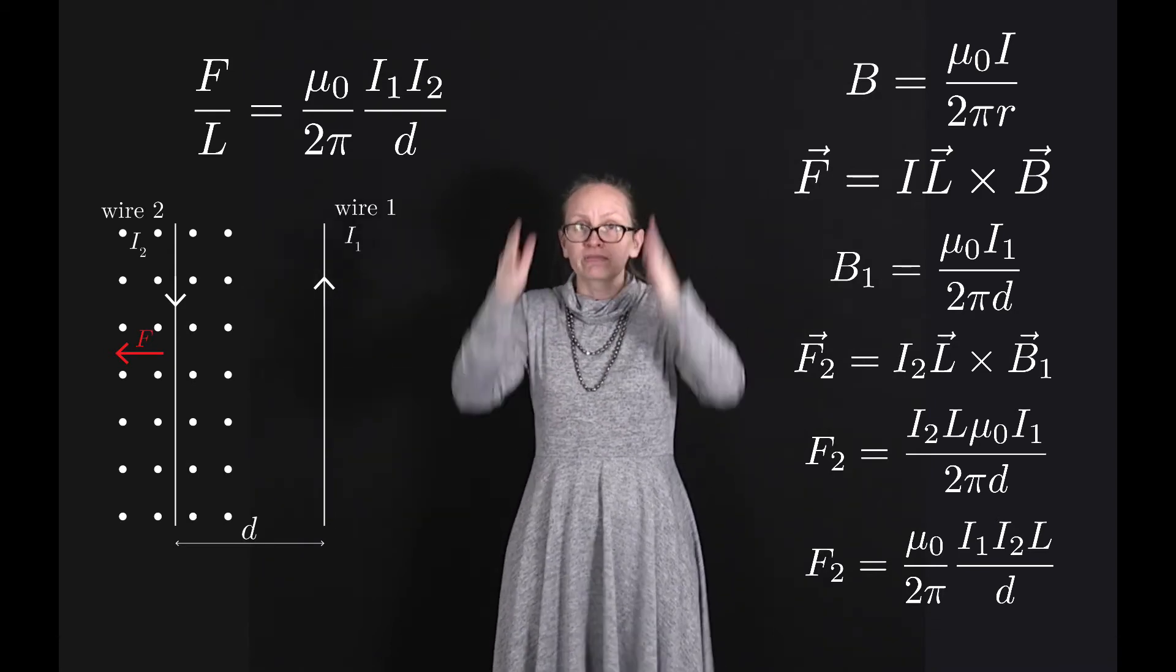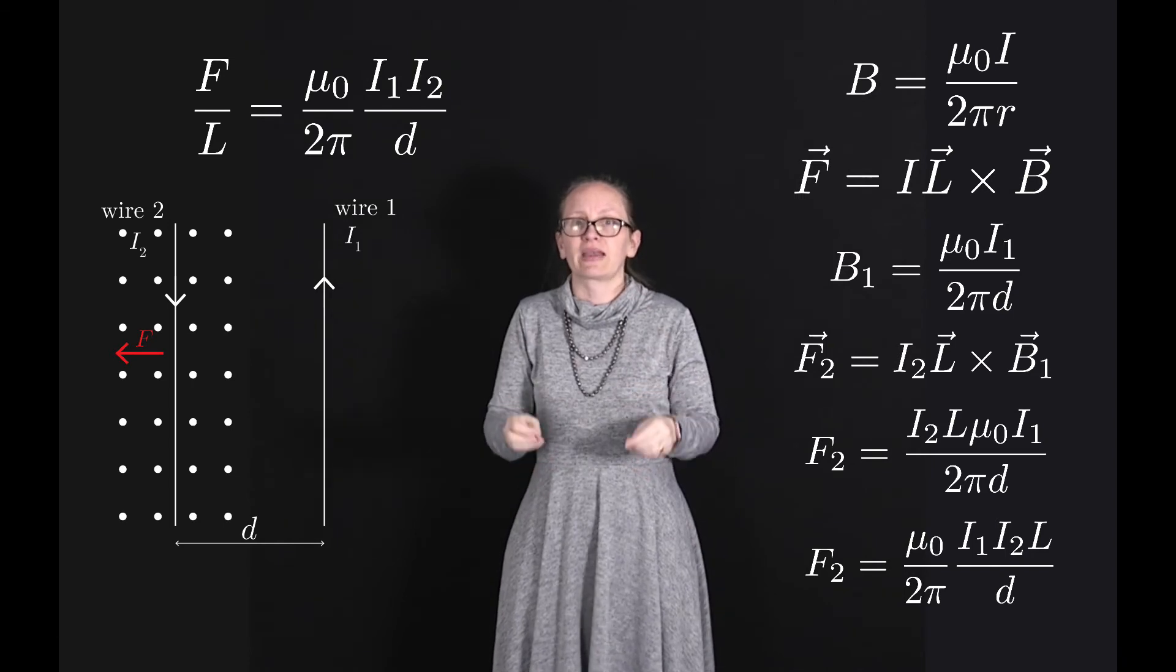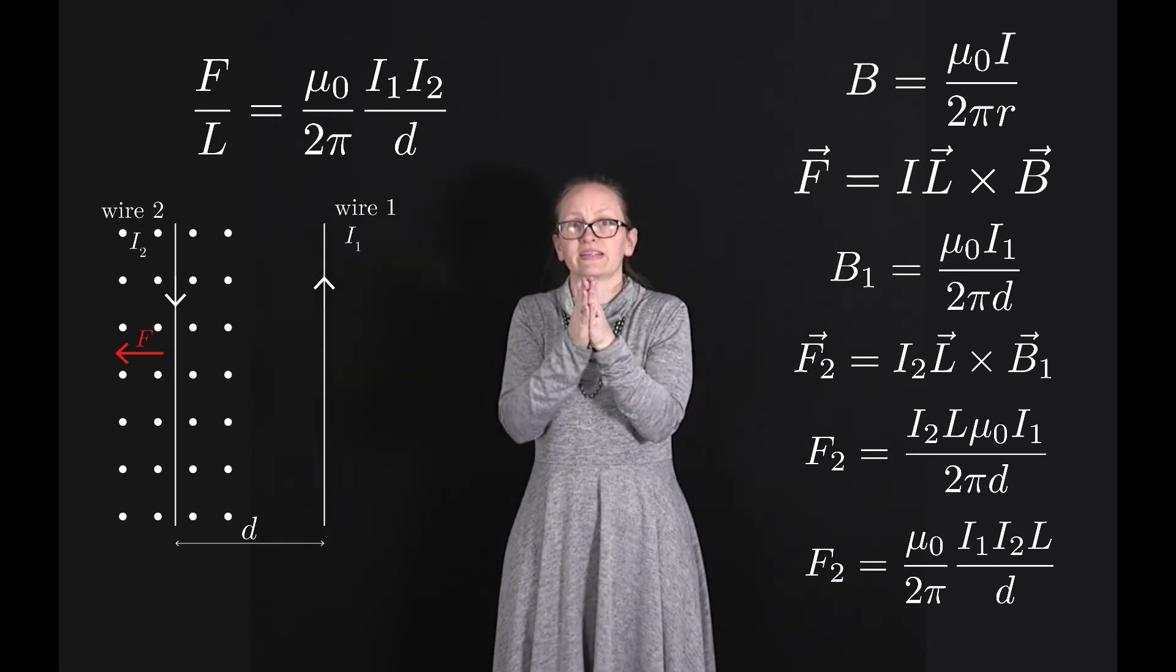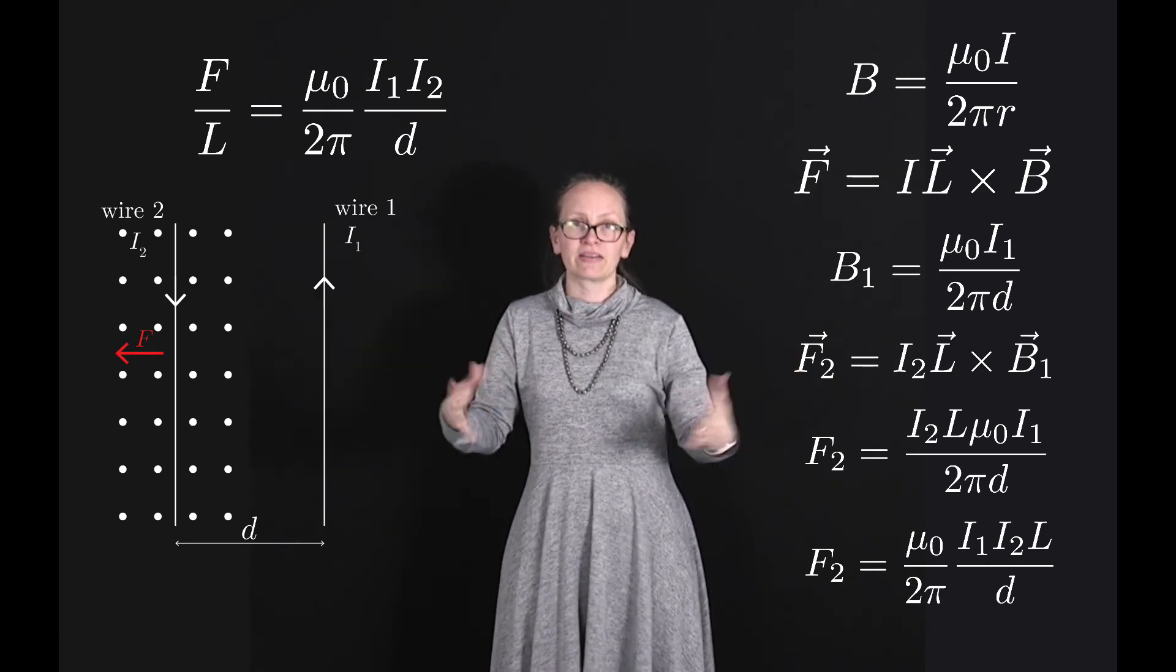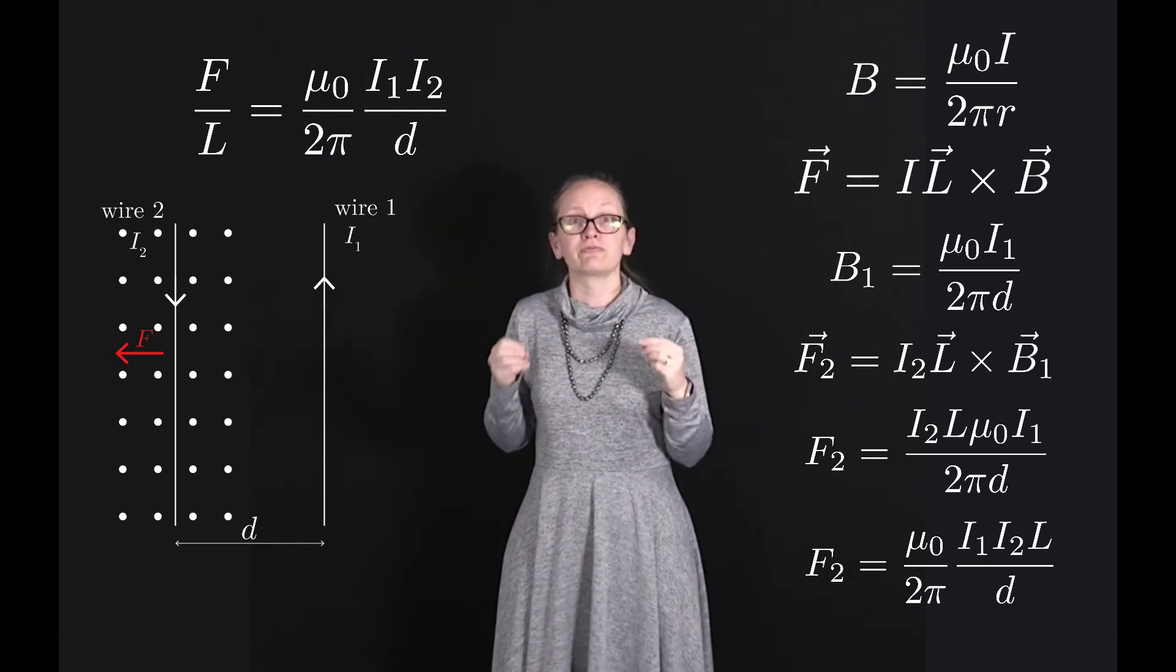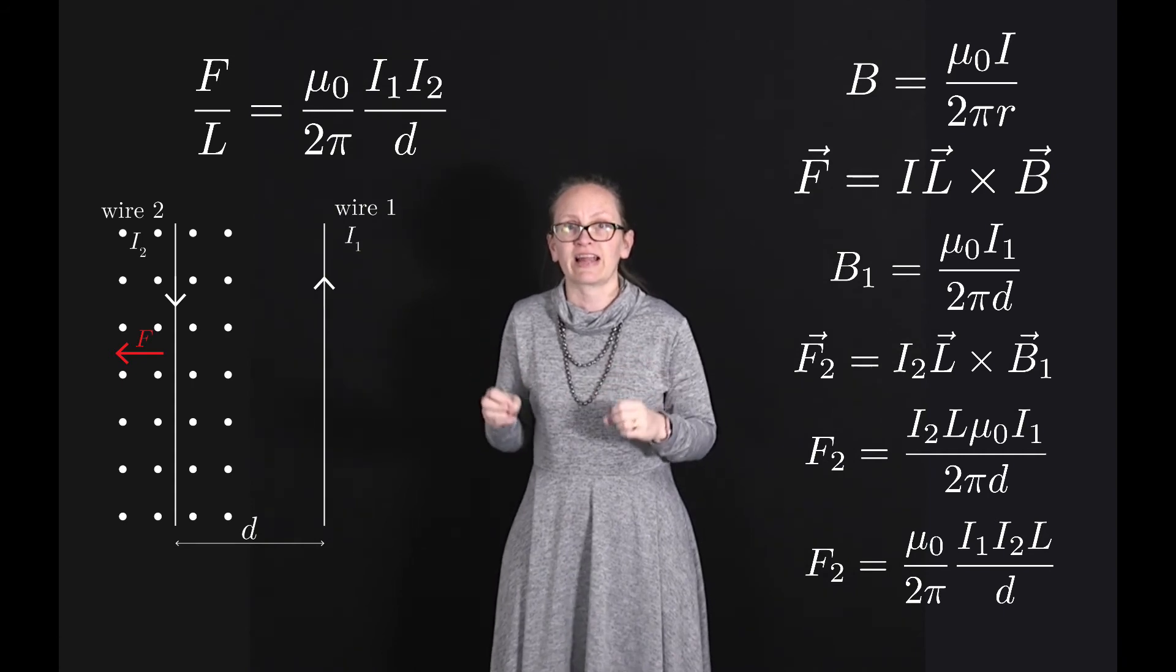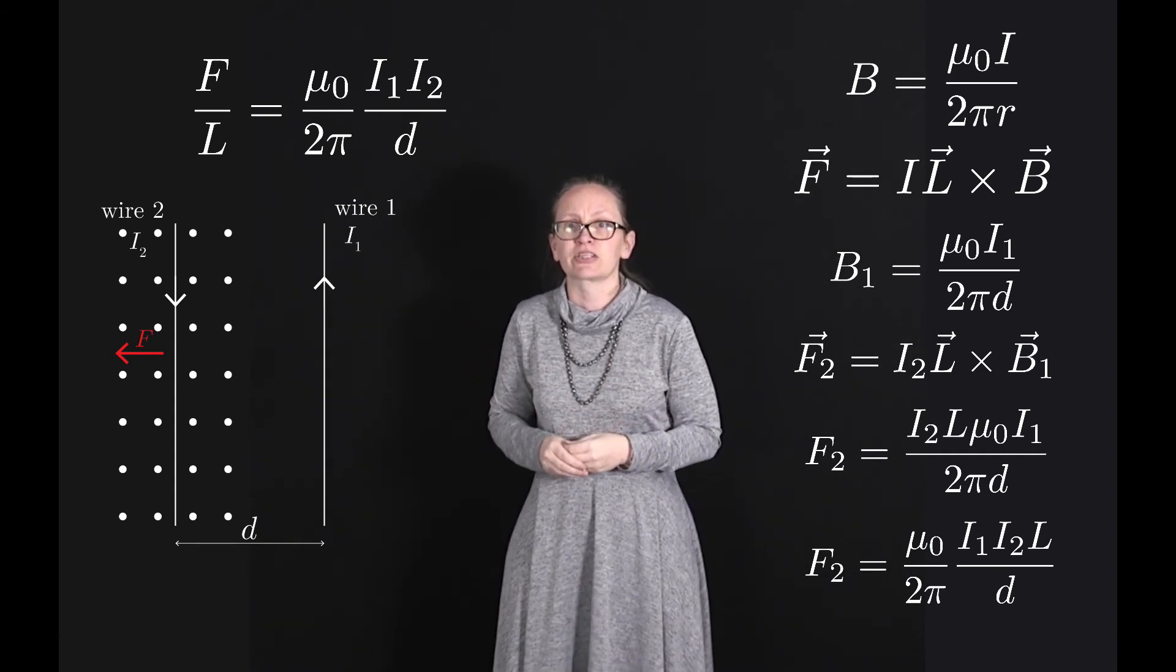So when we have long current carrying wires, when the currents flow in the same direction we get an attractive force and when they flow in opposite directions they get a repulsive force. This is physics so we should really check that this works in reality. So let's have a look at a demonstration of this now.